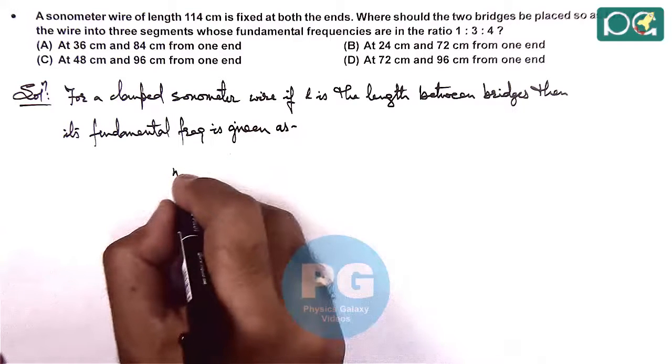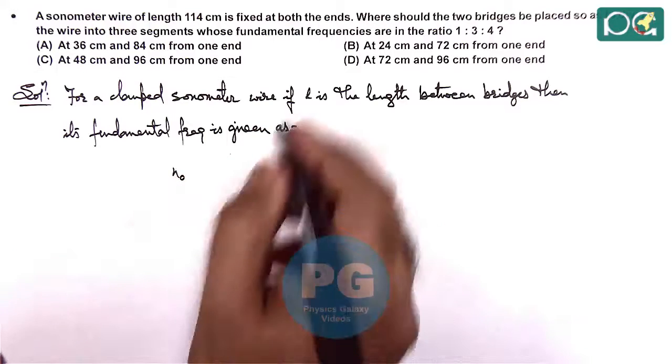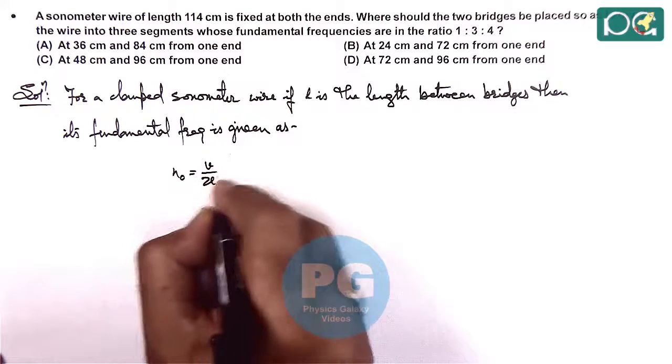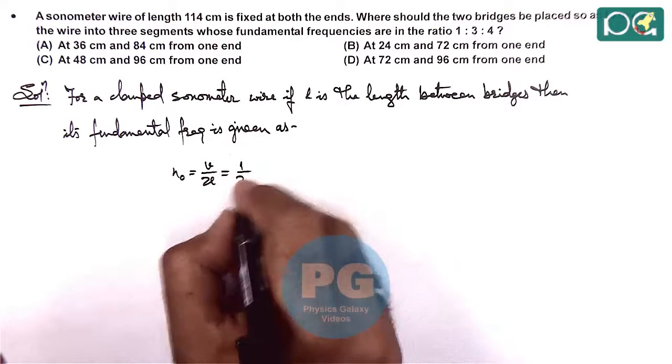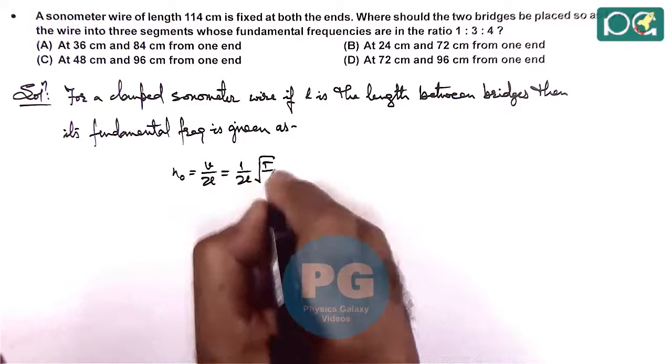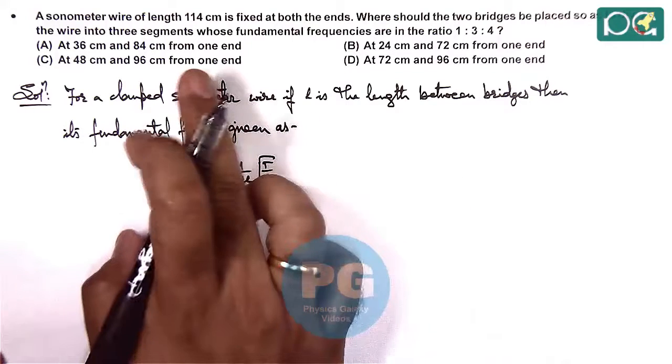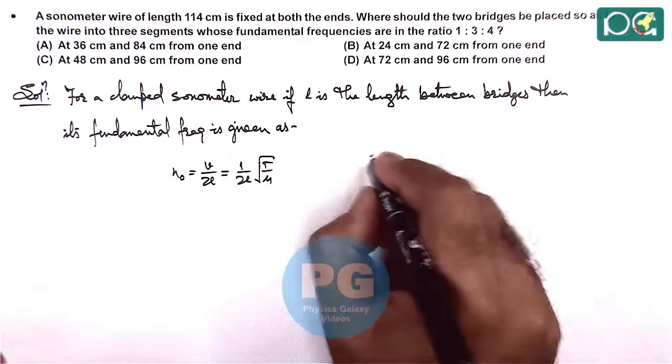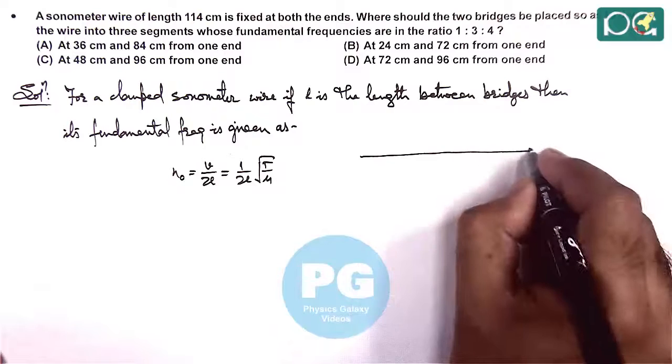The fundamental frequency of a wire of length L is V/2L, where V = √(T/μ). For a single wire in this situation, T and μ are the same because this is a clamped sonometer wire.